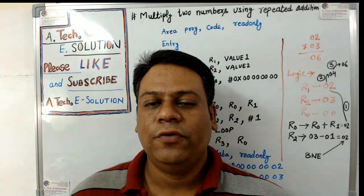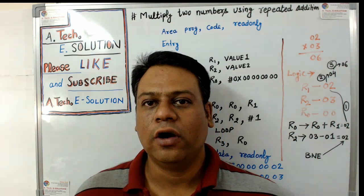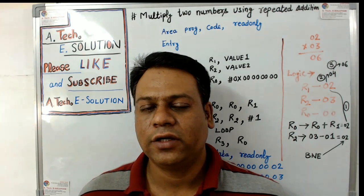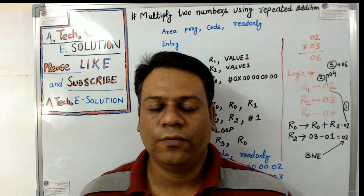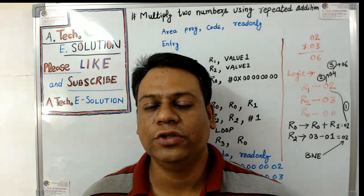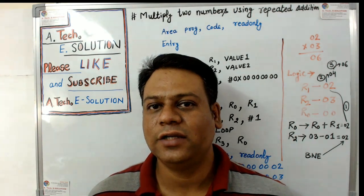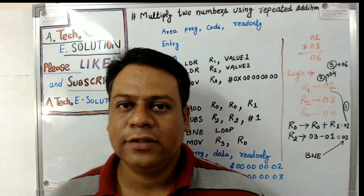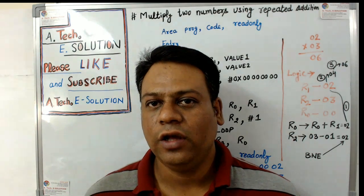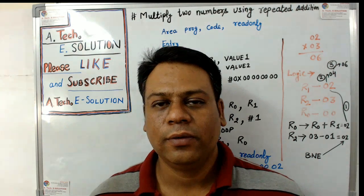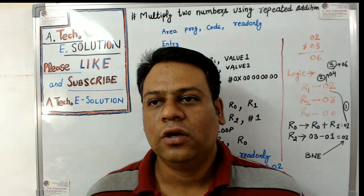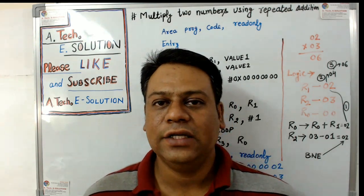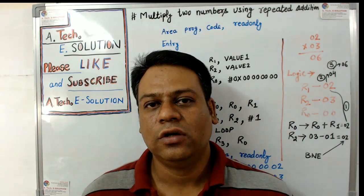We will write a program to multiply two numbers using repeated addition. In an ARM processor we can multiply directly, but we will perform this operation using repeated addition. The concept is: if we take the first number r1 equal to 2 and the second number r2 equal to 3, then 2 multiplied by 3 gives a result r0 equal to 6. So 2 is added three times to get the result 6.